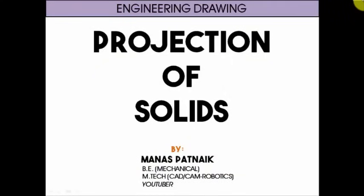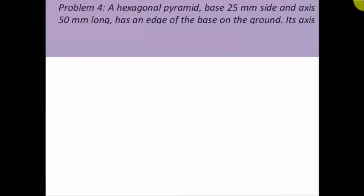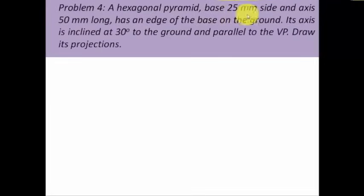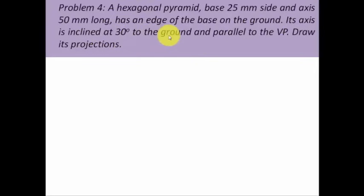Hey guys, this is Manus and I'm back with a new tutorial on projection of solids. This time the object we picked up is a hexagonal pyramid. The question goes: a hexagonal pyramid with base 25 mm side and axis 50 mm long has an edge of the base on the ground. Its axis is inclined at 30 degrees to the ground — ground refers to a horizontal plane — and parallel to the VP. Draw its projections.